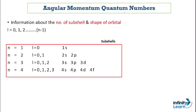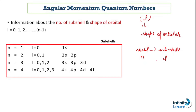The next quantum number is the angular momentum quantum number, also known as the azimuthal momentum quantum number, denoted by small l. It tells us about the shape of orbitals. Firstly we get a shell denoted by N, then after that we find out the sub-shell denoted by L. This angular momentum quantum number gives information about the number of sub-shells in a shell and the shape of orbitals. The value of L ranges from 0 to N minus 1.